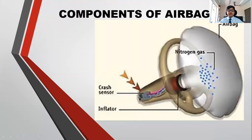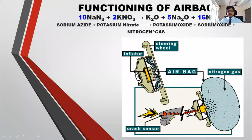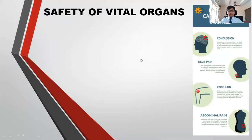The crash sensor sends a signal to the inflator system, and the main function of the airbag is performed by the inflator system. The functioning of an airbag includes: first, the crash sensor sends a signal to the control unit. Then the control unit sends a message to the inflator system, which releases nitrogen gas by igniting a mixture of sodium azide and potassium nitrate. The nitrogen gas fills the airbag and the airbag gets blown up. The airbag is a vital feature of modern-day cars which keeps the vital organs of travelers safe in any mishap.